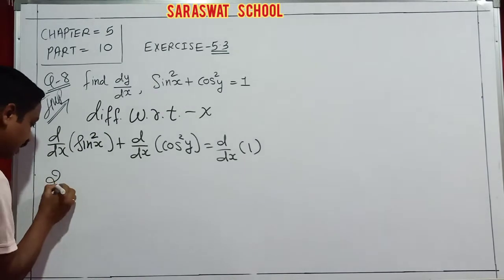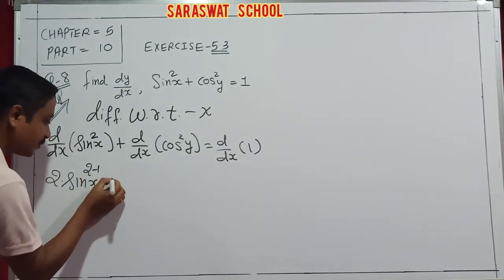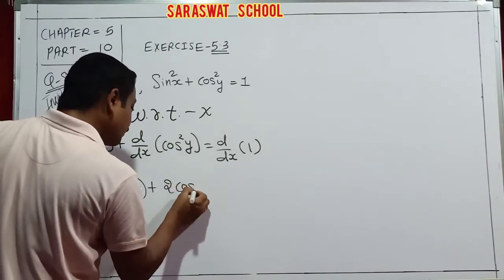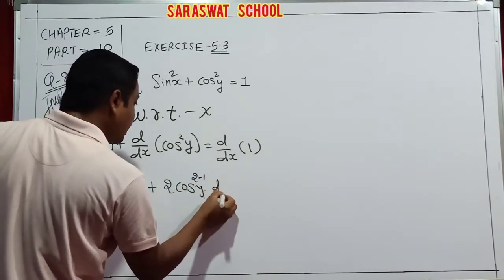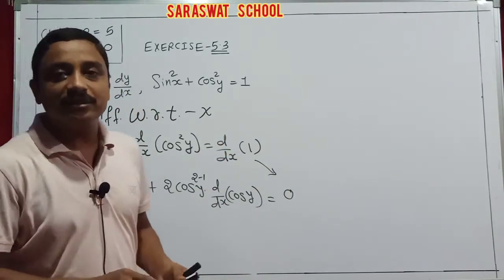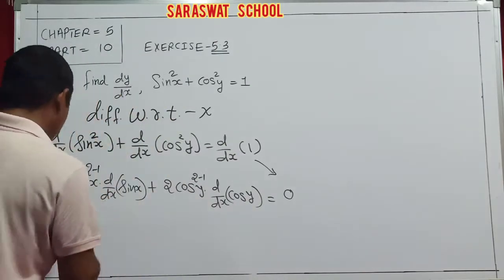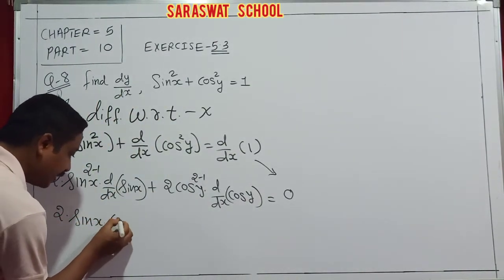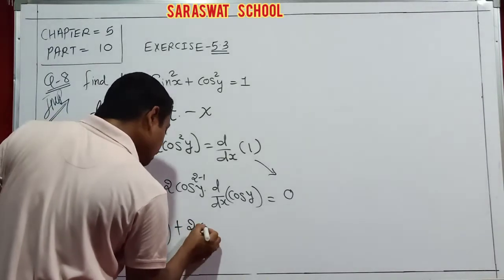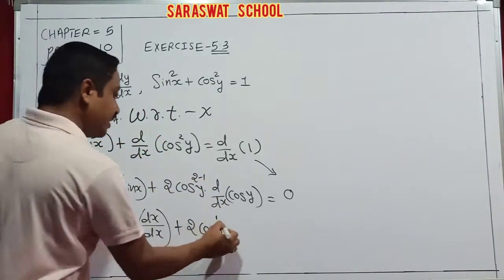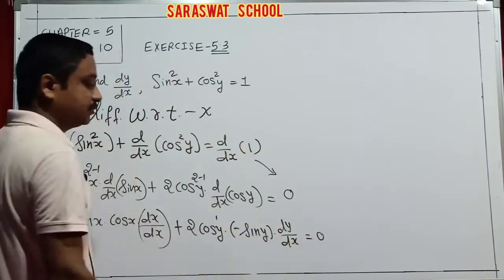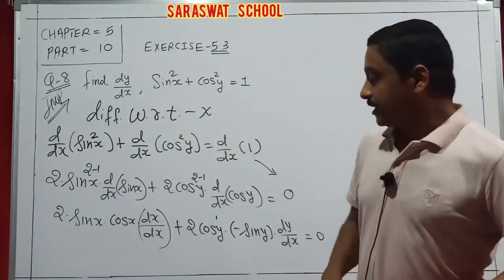So here 2·sin^(2-1)·x and d/dx of sin as it is. Similarly 2·cos^(2-1) and d/dx of cos y as it is. The constant derivative — I hope you know — is 0. So finally we have 2 sin x, then the derivative of sin is cos x, and the derivative of x with respect to x is dx/dx. Similarly 2 cos y, the derivative of cos y is -sin y, and the y derivative is dy/dx, and this equals 0.